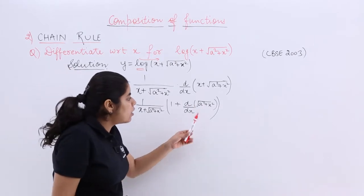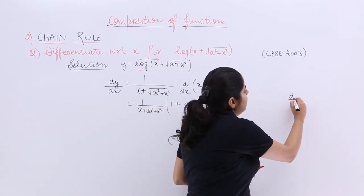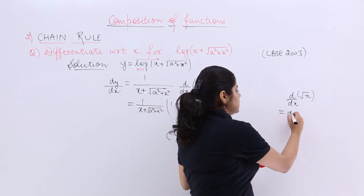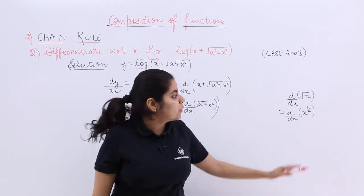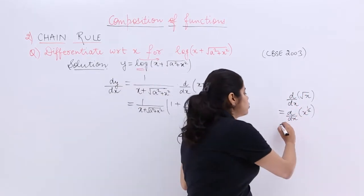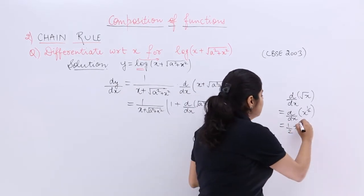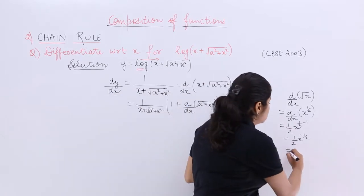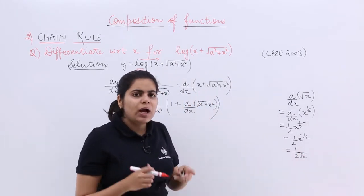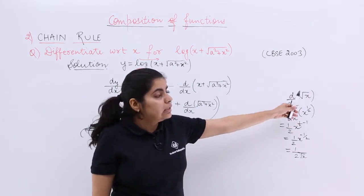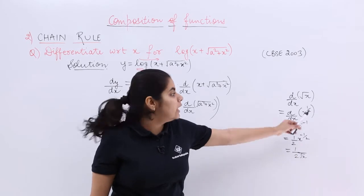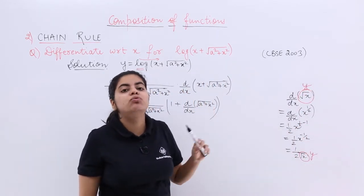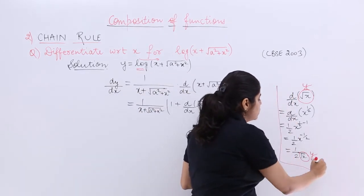To differentiate √x, recall that √x = x^(1/2). Using the power rule: d/dx of x^n = n·x^(n-1), we get (1/2)·x^(-1/2) = 1/(2√x). So for any term under a root, the differentiation is 1/2 times that same term in the denominator. This is a key note point you should remember.